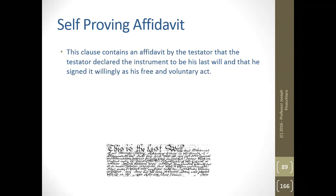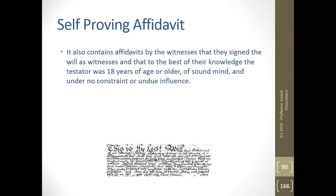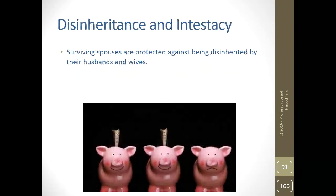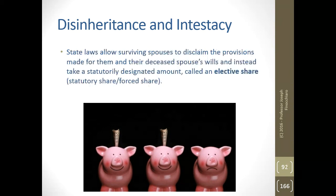In some states, courts will allow a will without the testimony of witnesses if it contains a self-proving affidavit and no one objects to its allowance. This clause contains an affidavit by the testator that he declared the instrument to be his last will and that he signed it willingly as his free and voluntary act. It also contains affidavits by the witnesses that they signed the will as witnesses and that to the best of their knowledge the testator was 18 years of age or older and met all the triggers of a valid will. Surviving spouses are protected against being disinherited — state laws allow surviving spouses to disclaim the provisions made for them in their deceased spouse's will and instead take a statutorily designated amount called an elective share, also known as a forced share or statutory share.